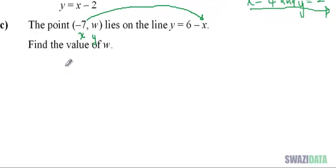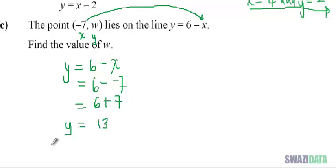So y equals 6 minus x, where x is minus 7. That gives us 6 minus negative 7. Remember that minus negative becomes plus, so we get 6 plus 7, which equals 13. Therefore, w equals 13.